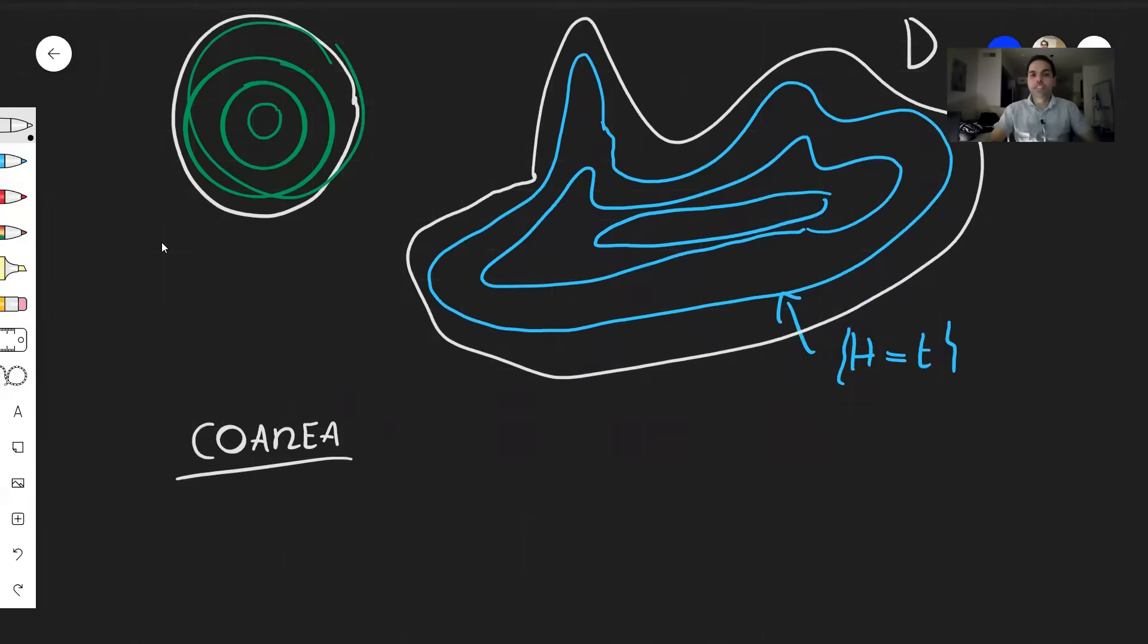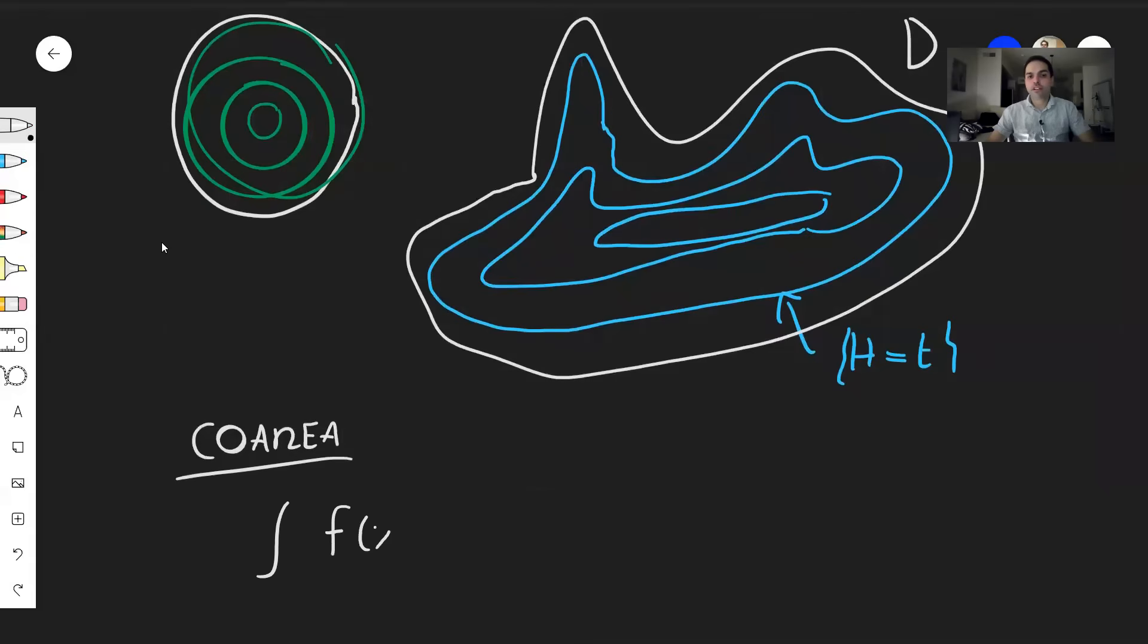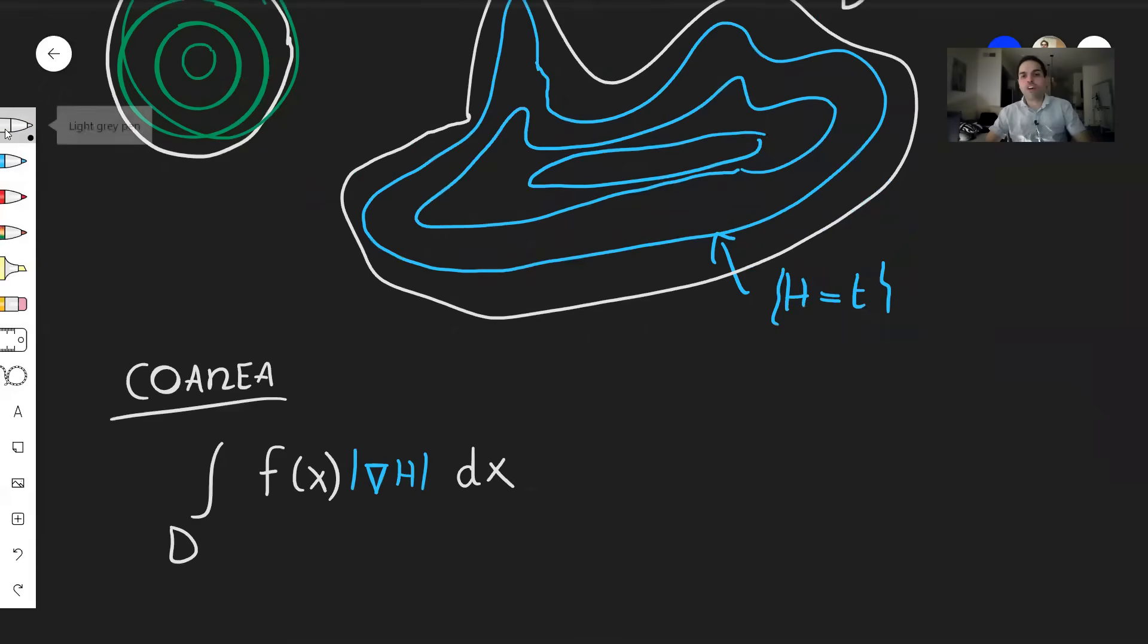Namely, suppose you want to integrate a function F over the region D. It turns out it's not quite the function F, but because this H could have kinks or wobbles, you have to take into account how much it moves. So it's really integral of F times length of the gradient of H, which again, most cases is one. So just really think integral of F equals to the following. So you integrate over all the radii, so before it was R, but here you integrate with respect to T, and T could be negative. So from negative infinity to infinity over each shell,